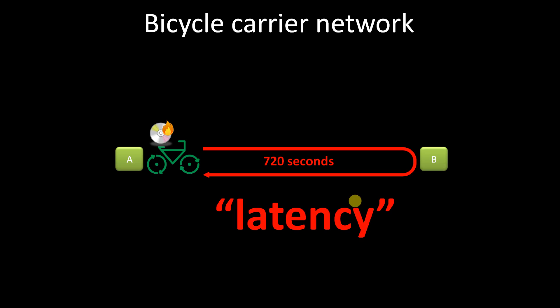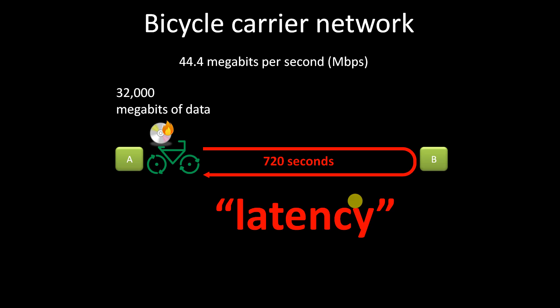Within those 720 seconds, our bicycle network delivered 4,000 megabytes of data per DVD, which translates to 32,000 megabits of data. If we divide 32,000 megabits by 720 seconds, our network delivered information at a rate of 44.4 megabits per second. This rate of delivery is called bandwidth.